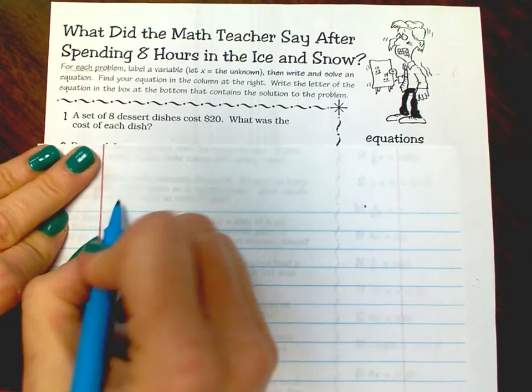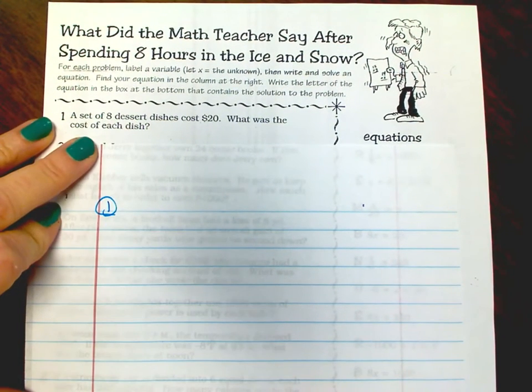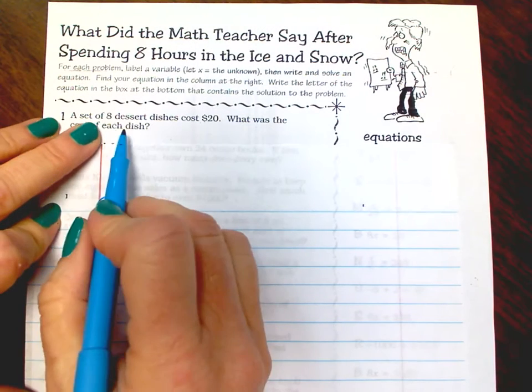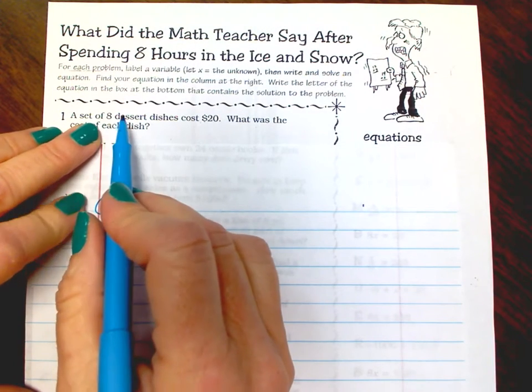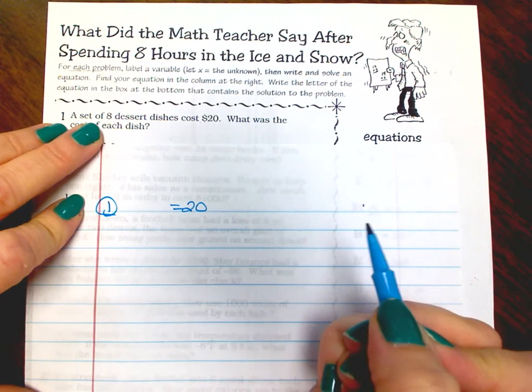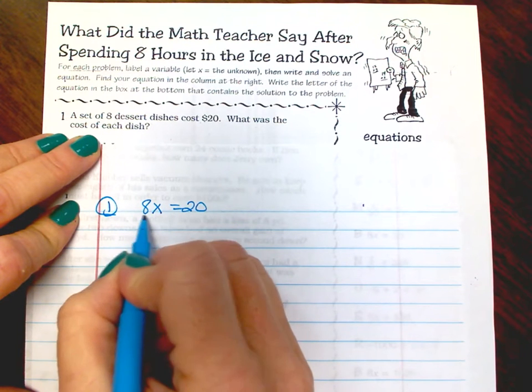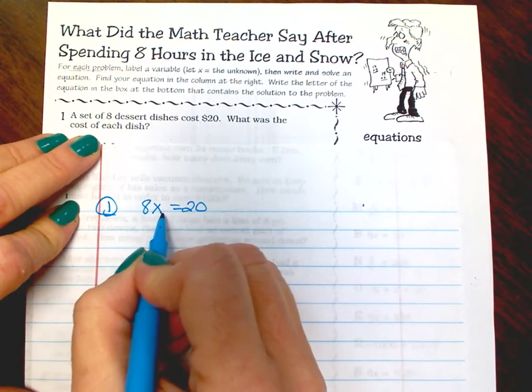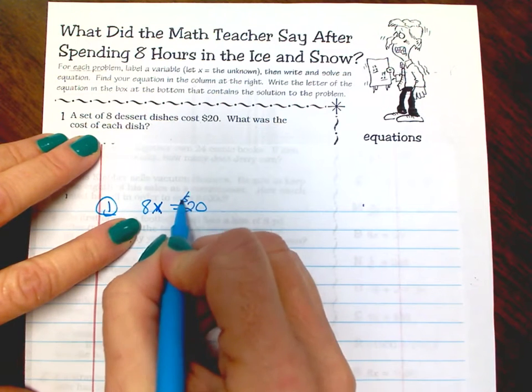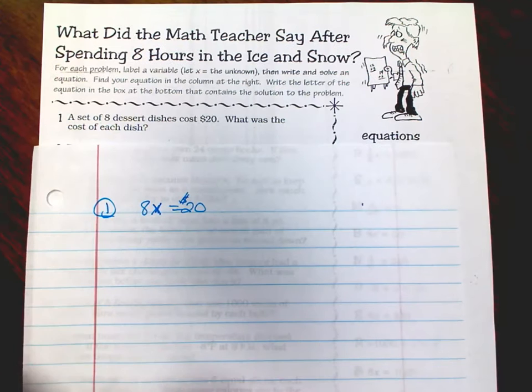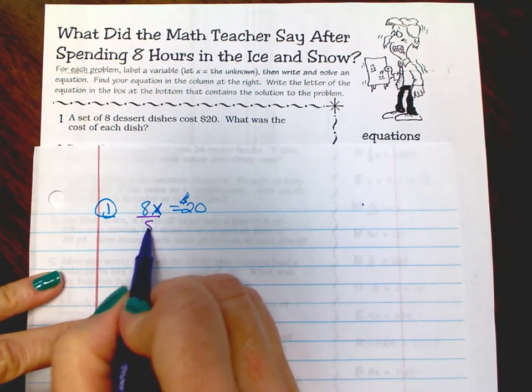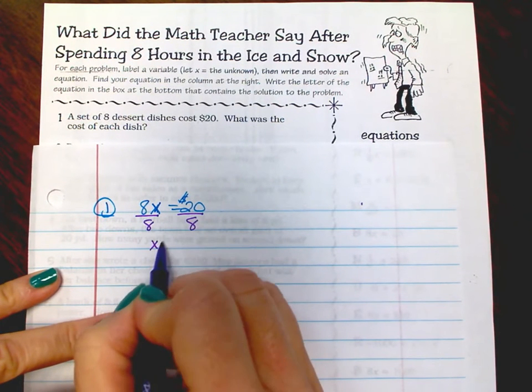So if each dessert cost eight, there were eight desserts, the total cost is twenty dollars. What was the cost of each dessert? Well we had eight of them, so if I had eight desserts, I multiply how much they cost should give me twenty dollars, but now you have to solve for it. What is x doing to the number? It's multiplying, so I need to divide, and then you would get how much each dessert cost.